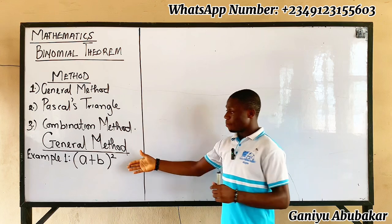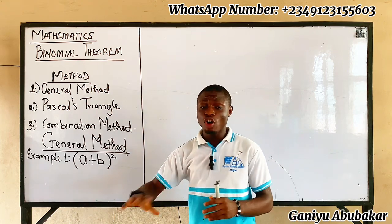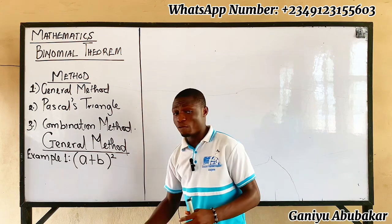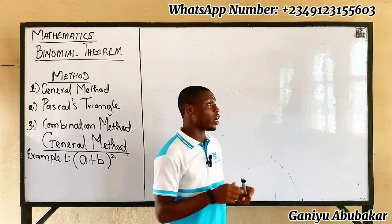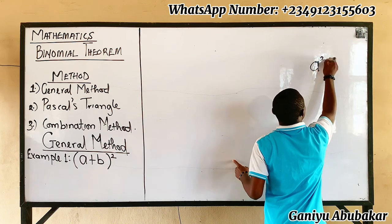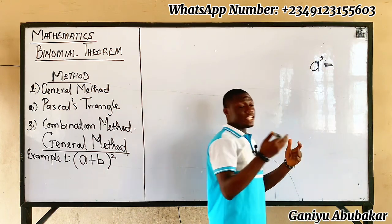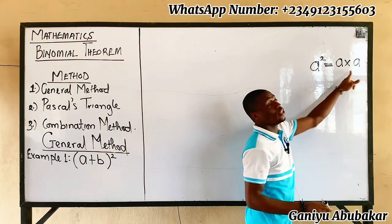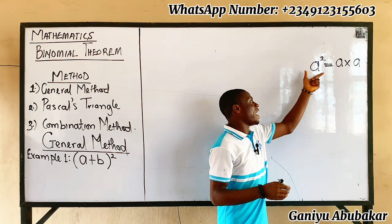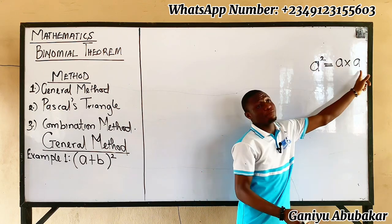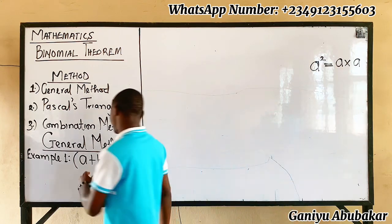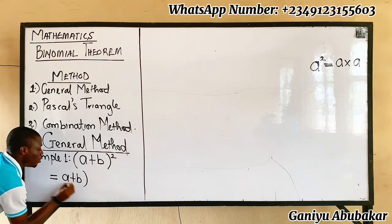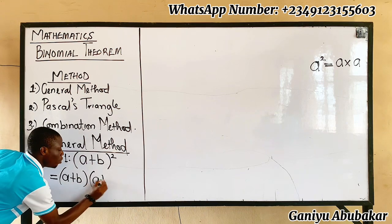We're told to expand (a + b)² using the concept of binomial theorem. From the idea of indices, if I have a², that means a times a. So in this case, (a + b)² simply means (a + b) multiplying (a + b).